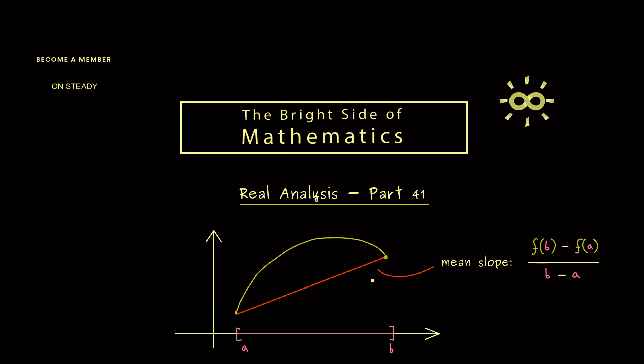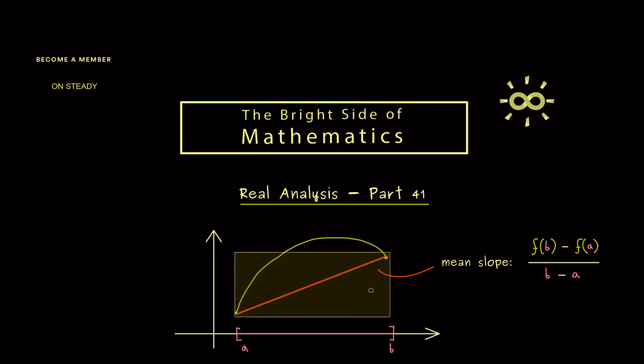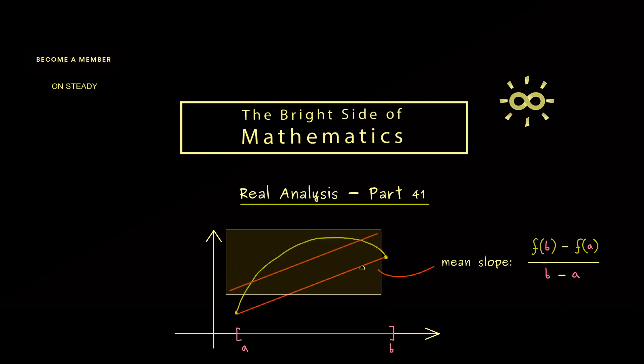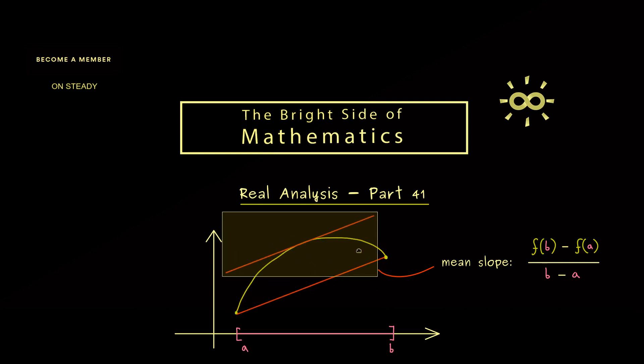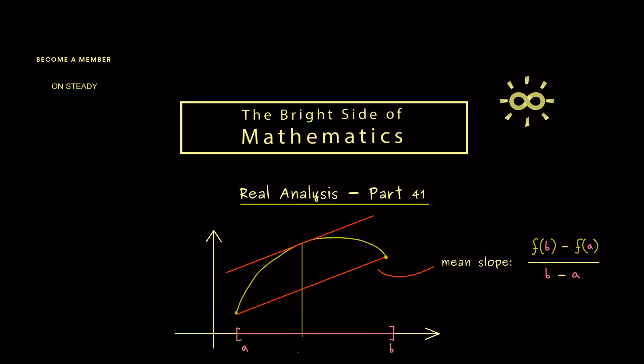Now the claim of the mean value theorem is that we also find a tangent with the same slope. In the picture this would mean we can push this secant until we find the correct slope. And the corresponding point in the interval [a,b] we call x hat. All in all this is already the whole mean value theorem.